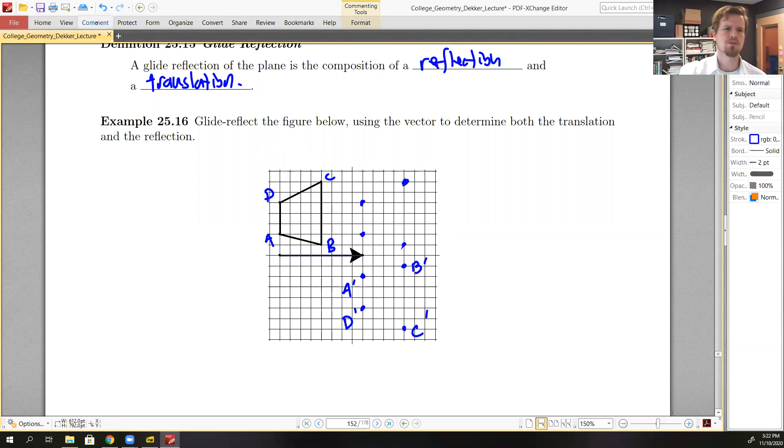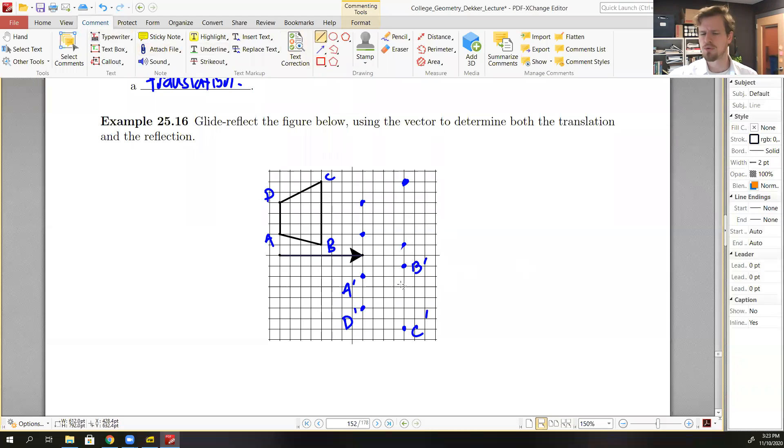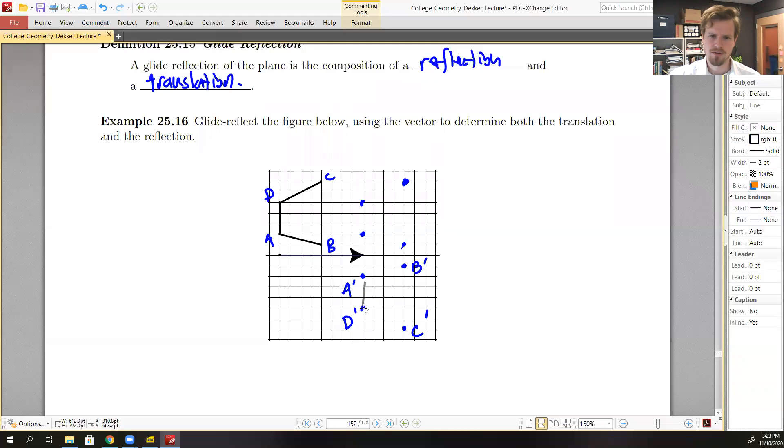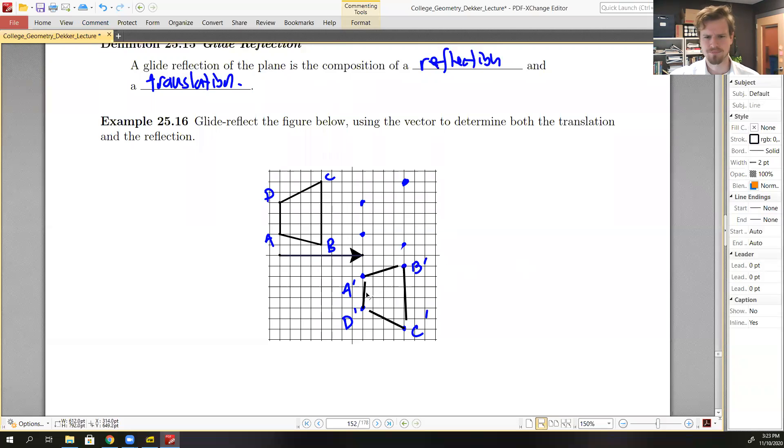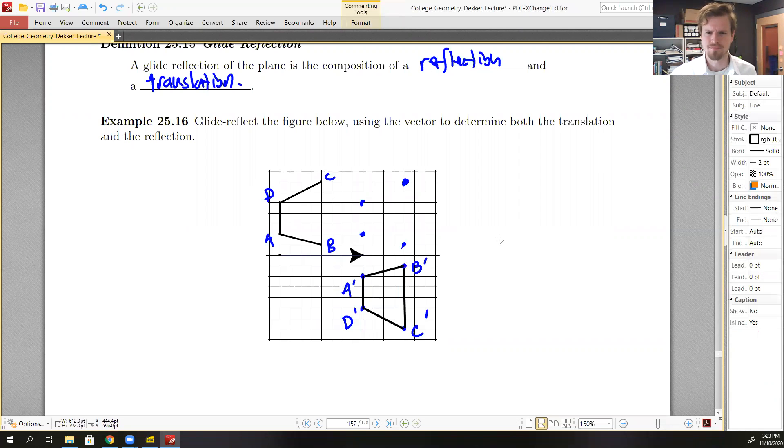And then we want to join D prime and we want to join those with edges. And we have our transformed quadrilateral. Excellent. So it looks a little bit different, right?